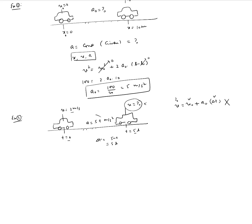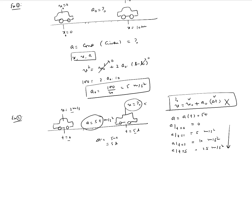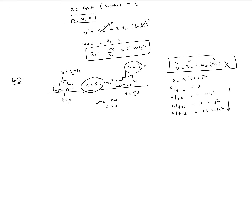But doing that would be a grave mistake. The acceleration a = 5t is not constant — it is a function of time. At t = 0 it is 0; at t = 1 s it is 5 m/s²; at t = 2 s it is 10 m/s²; at t = 5 s it is 25 m/s². The acceleration is clearly changing, so Galileo's equations cannot be used.